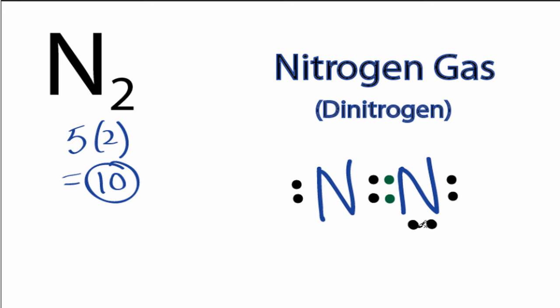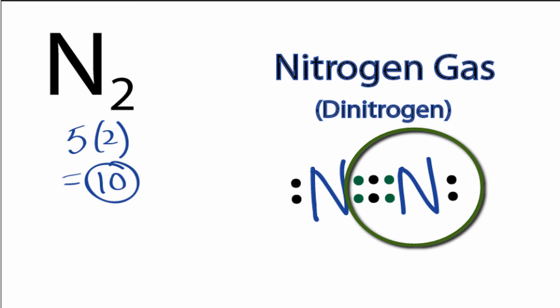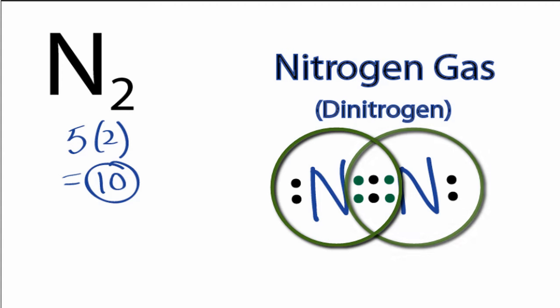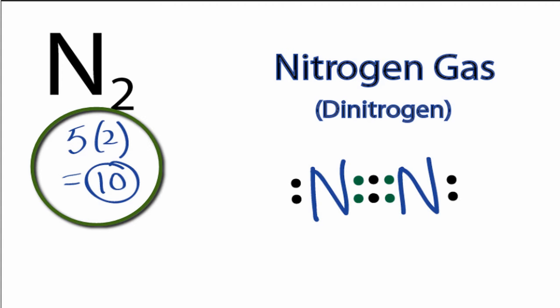Let's take these 2 valence electrons here and put them in the middle to form a triple bond. The nitrogen on the right still is using 8 valence electrons. Its octet is full, but now the nitrogen on the left also has a full octet, and we're only using the 10 valence electrons that we have for the N2 Lewis structure.